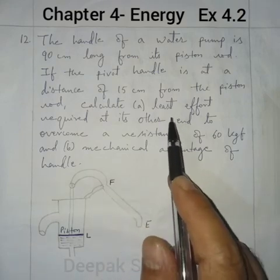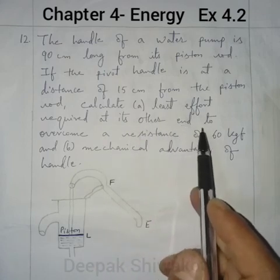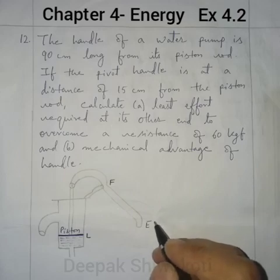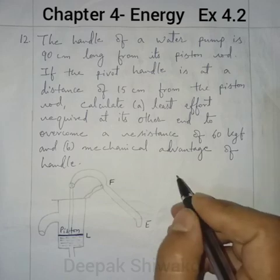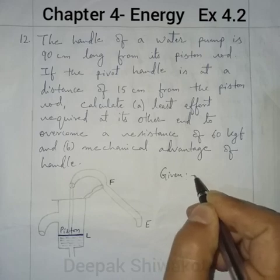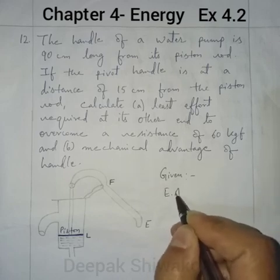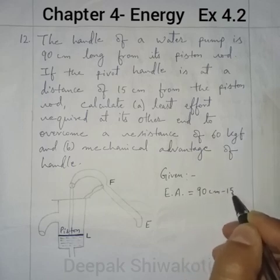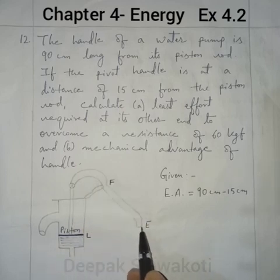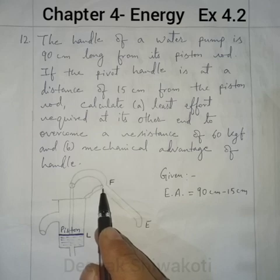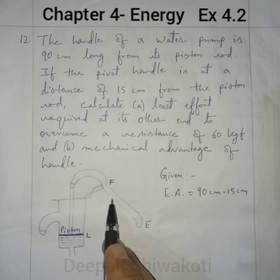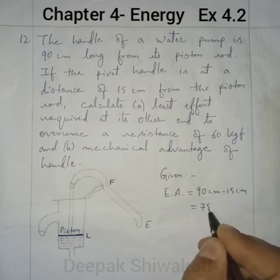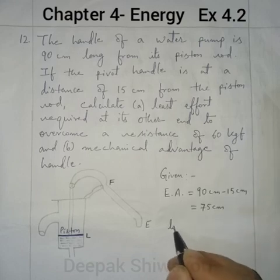Part A: we have to calculate the least effort required at its other end to overcome a resistance of 60 kgf. So we have to find effort. The effort arm (EA) will be equal to 90 cm minus 15 cm, because effort arm is defined as the distance between the fulcrum and the effort. So 90 minus 15 is 75 cm.